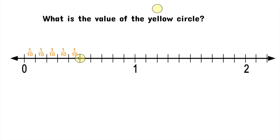How many one tenths was that is the question. Well, you can see we have one, two, three, four, five tenths. So this yellow dot represents five tenths.